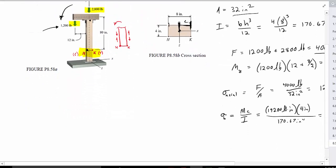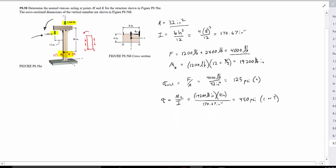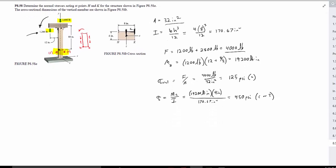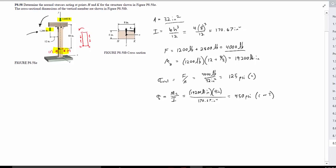So knowing that and thinking about that, what we can then do with these values that we just solved for, we can say, well, the summation of them. So our stress at h is going to equal our negative 125 psi, and since we have a compression on that side, it will be the negative 450 psi, and then that will equal a negative 575 psi, so that's going to equal 575 psi in compression, and that's our stress at h.